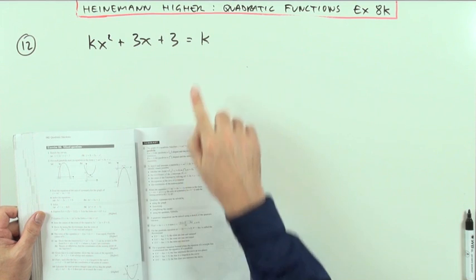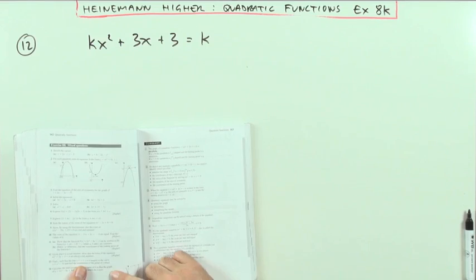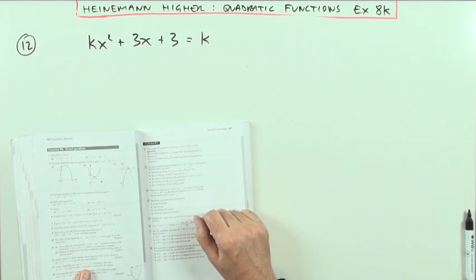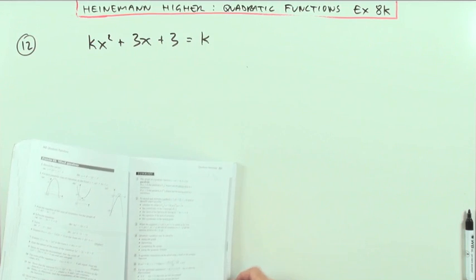Another form of a question. Given that k is a real number, show that the roots of this equation are always real, always real number it actually says.